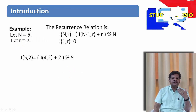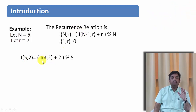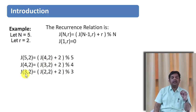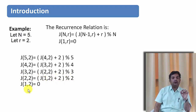Let us say n equals 5 and r equals 2. We want to find j(5, 2). Using the recurrence, j(5, 2) = j(4, 2) + 2 mod 5. To find j(4, 2) = j(3, 2) + 2 mod 4. To find j(3, 2) = j(2, 2) + 2 mod 3. To find j(2, 2) = j(1, 2) + 2 mod 2. And j(1, 2) = 0, which is our base case.